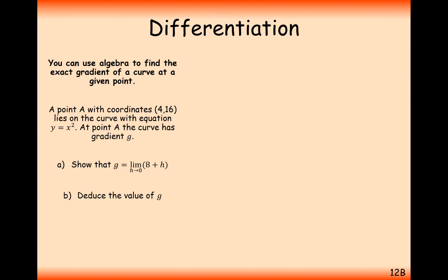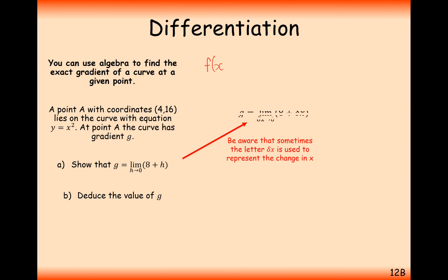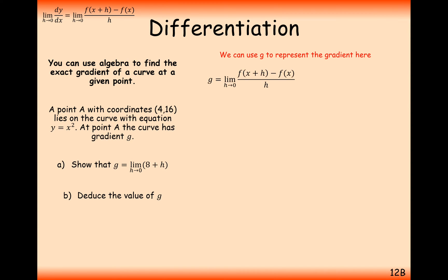So a little question — how can this be used in an exam? A point A with coordinate 4, 16 lies on the curve with the equation y equals x squared. At point A, the gradient of the curve is g. Show that g equals the limit as h tends towards zero of 8 plus h. We're going to use the formula f of x plus h minus f of x all over h, using the value x equals 4 and keeping h in the expression.